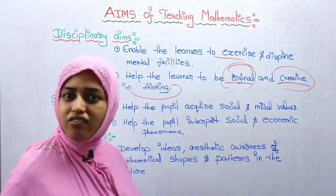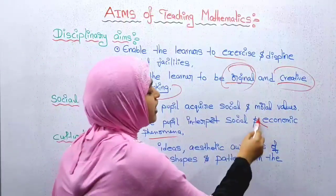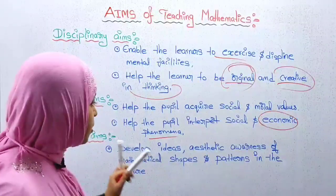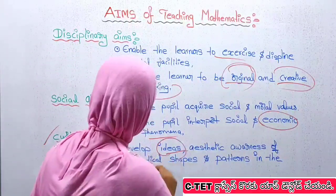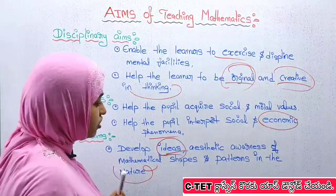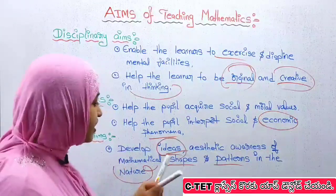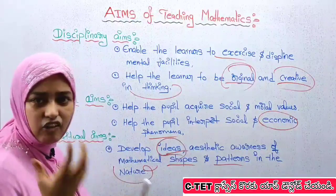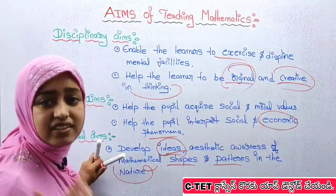We help people interpret social and economic phenomena. Counting, calculations, and money — when you deal with money, that's why we develop understanding of economic phenomena. The last aim is cultural: to develop aesthetic awareness of mathematical shapes and patterns in nature — in historical places, temples, and other cultural contexts. The cultural aim is to create appreciation for mathematics.